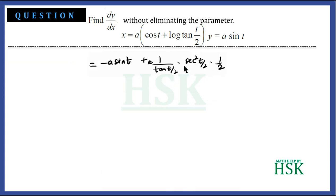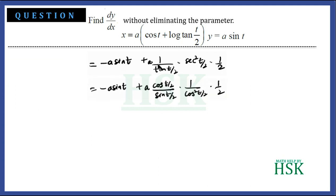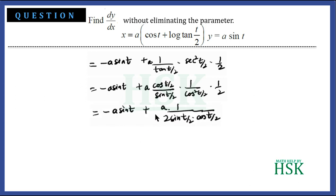To simplify, we write tan(t/2) as sin(t/2)/cos(t/2), so 1/tan(t/2) becomes cos(t/2)/sin(t/2). And sec²(t/2) is written as 1/cos²(t/2) times 1/2. The cos²(t/2) cancels out, giving a · 1/(2 sin(t/2) cos(t/2)).